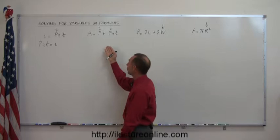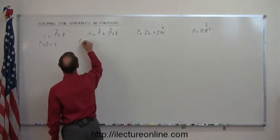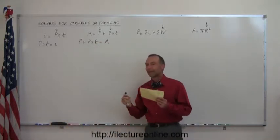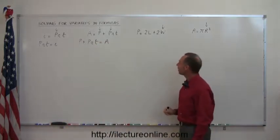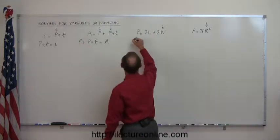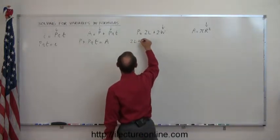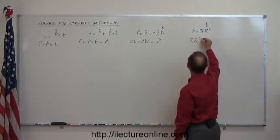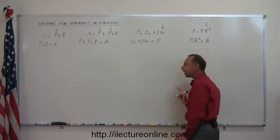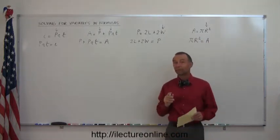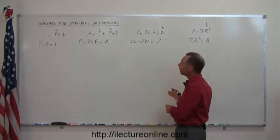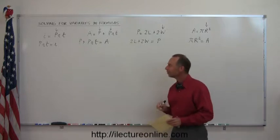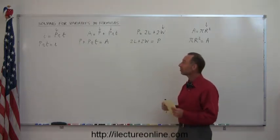Over here we'll do the same thing — turn the equation around. So we write p plus prt equals a. And again, if you do it at the same time, you don't have to worry about the signs. Over here, we'll write 2l plus 2w equals p. And over here, we'll write pi r squared equals a. So in each case, the variable we're looking for was on the right side of the equation, and we moved it to the left by simply turning the equation around.